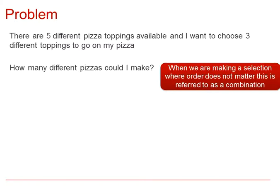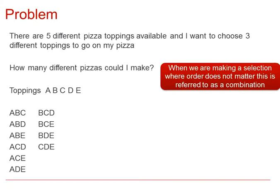However, in this scenario, when we are making a selection, order does not matter and therefore it's referred to as a combination. Let's denote the toppings by the letters A through to E. If we are only choosing three of them, these are the options. Could we have worked this out without listing these ten?